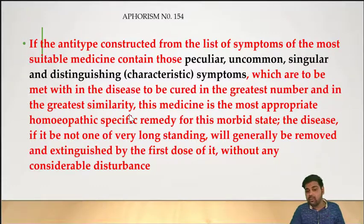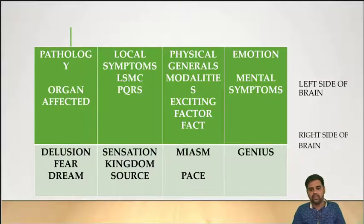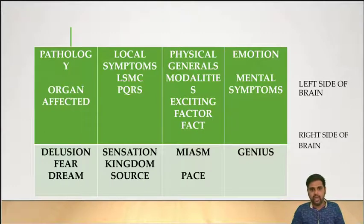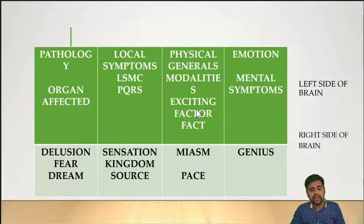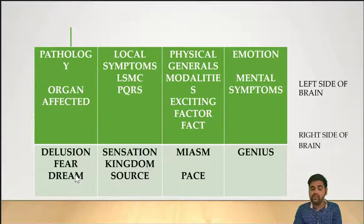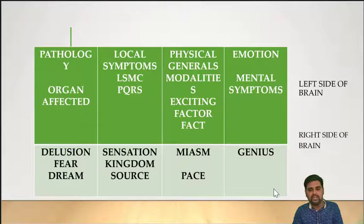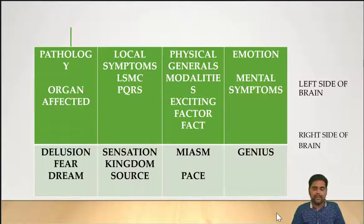Don't dare to ignore the symptom which is well-marked in a case. That's what I learned from that video. Now let's try to understand this with the Eight Box Method of Dr. Rajan Sankaran — it's a beautiful discovery. I made a previous video on this. The eight boxes are: pathology, local syndrome (with PQRS), physical generals, emotional and mental aspects, delusion and fears, sensation, miasm it belongs to, and the genius — the core essence of the remedy present throughout.